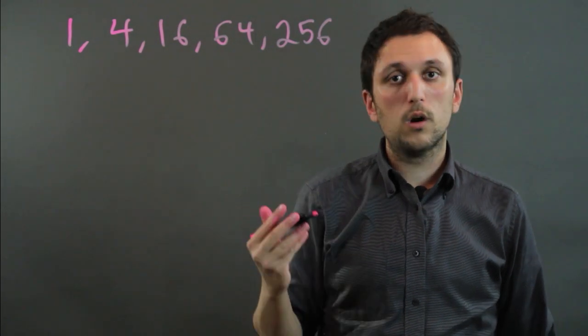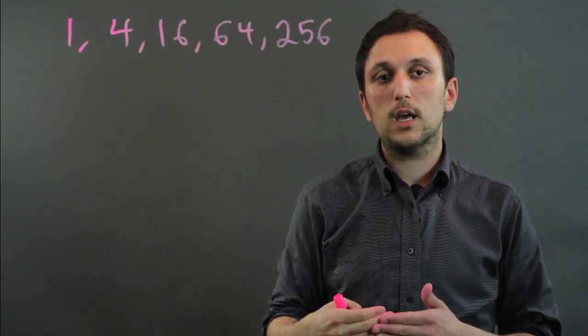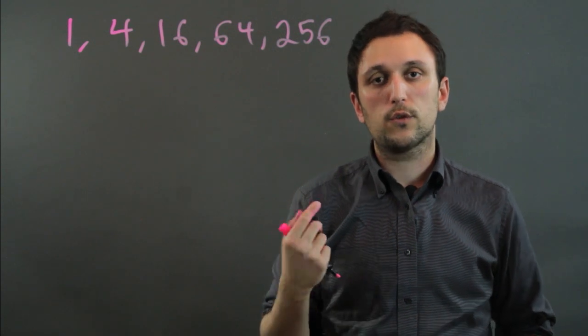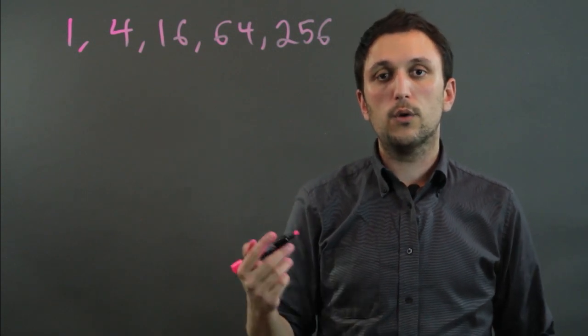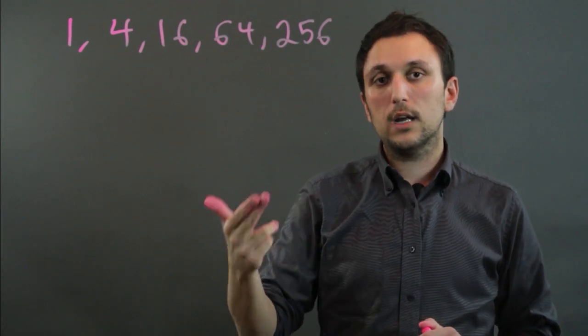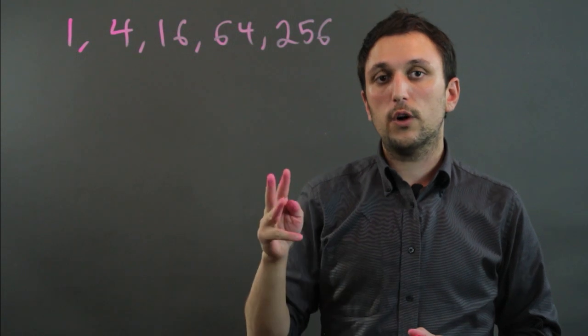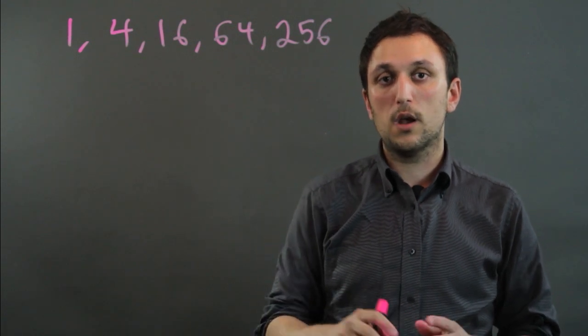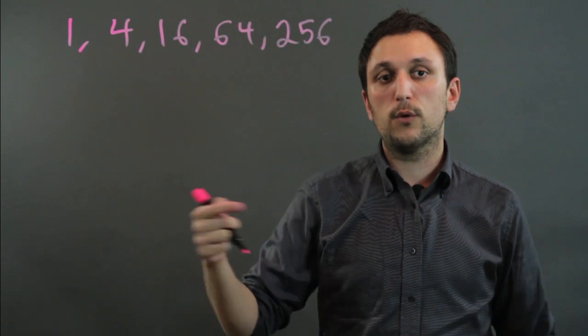Now I chose the number 4 because a real-world application of the geometric sequence is in the restaurant business. Restaurant owners always say that if you anger a customer, that customer will tell four friends not to go to your restaurant, and each of those four friends will tell four friends.